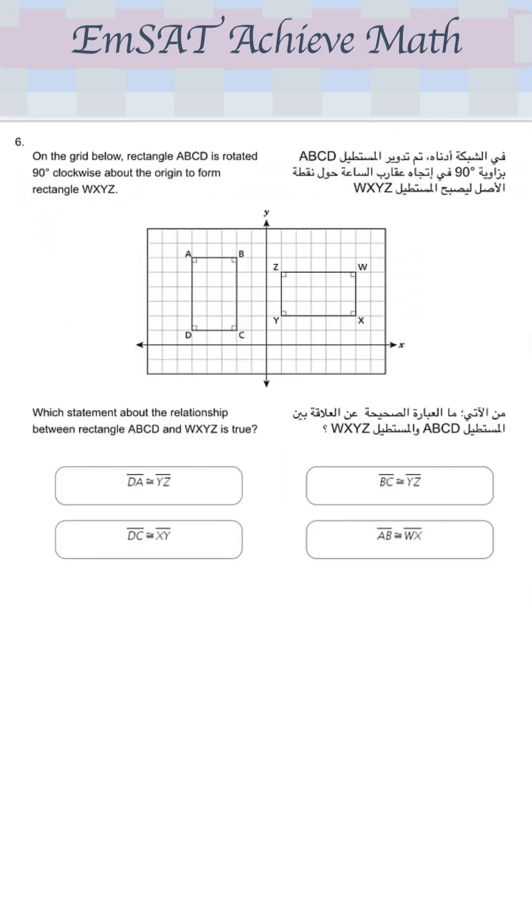On the grid below, rectangle ABCD is rotated 90 degrees clockwise about the origin to form rectangle WXYZ. Which statement about the relationship between rectangles ABCD and WXYZ is true.